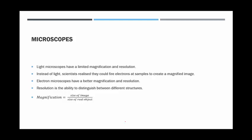The word resolution means the ability to distinguish between different structures, and magnification is about how much bigger something appears. It's calculated by using the size of the image divided by the size of the real object. Thank you for watching.